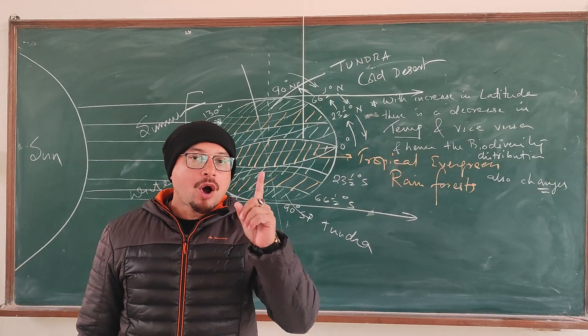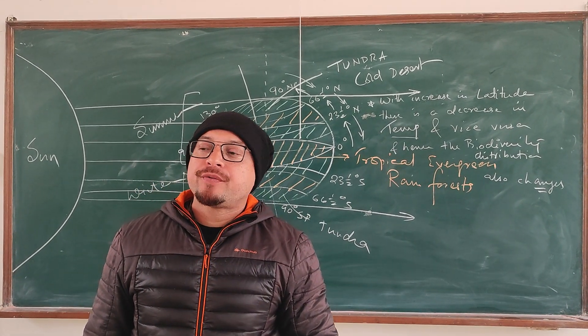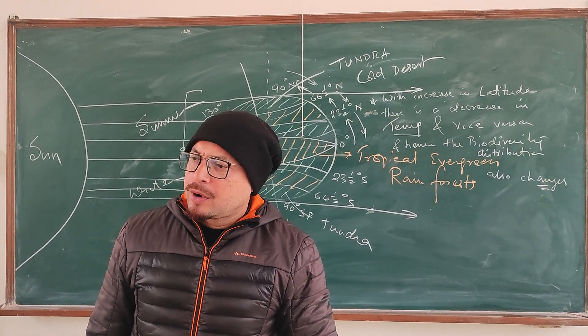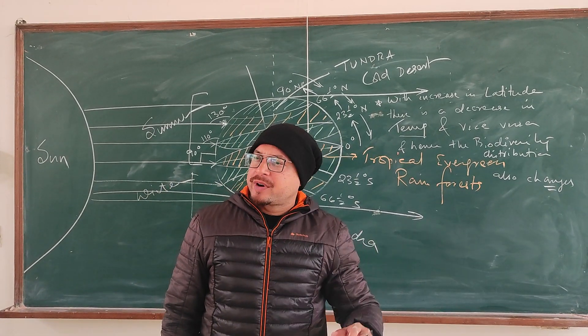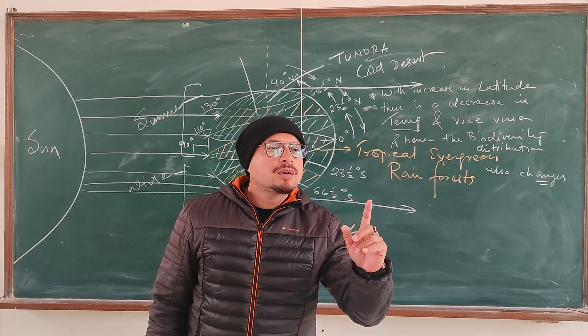It is always hot and humid conditions which are responsible for flourishing of biodiversity on earth. And therefore all the hotspots—be it Amazon forest, be it Madagascar—they all are around the equator.